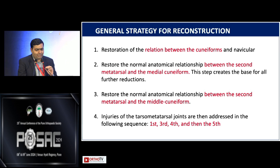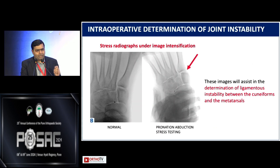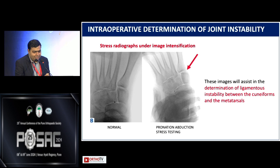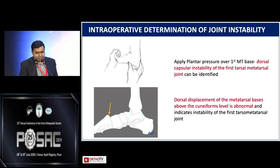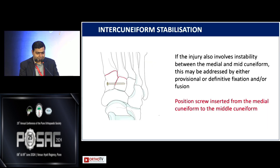The surgical strategy: first, restore the relationship between the cuneiform and navicular; then fix the second metatarsal to the medial cuneiform, then the second metatarsal to the middle cuneiform, and sequentially fix the first, third, fourth, and fifth columns. Under anesthesia, perform intraoperative stress testing before opening — you often find additional instability, such as in the first TMT joint. Also perform a plantar stress test to look for sagittal instability. Use a single or dual approach depending on the number of columns to be addressed.